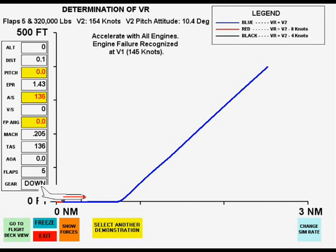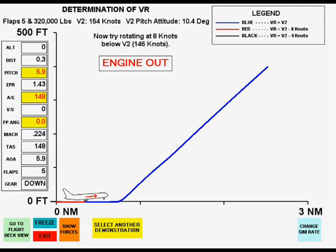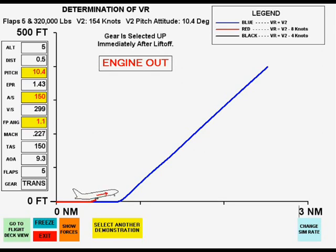The second simulation is a premature rotation in which the required V-2 of 154 knots is not reached until well over 300 feet.